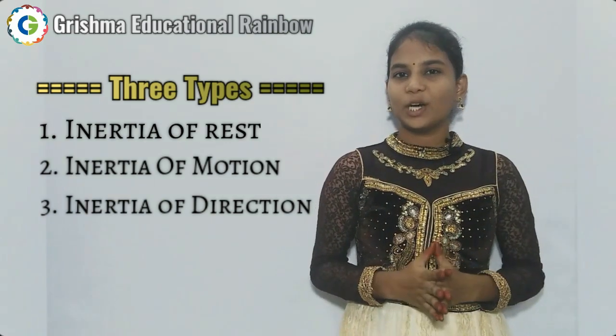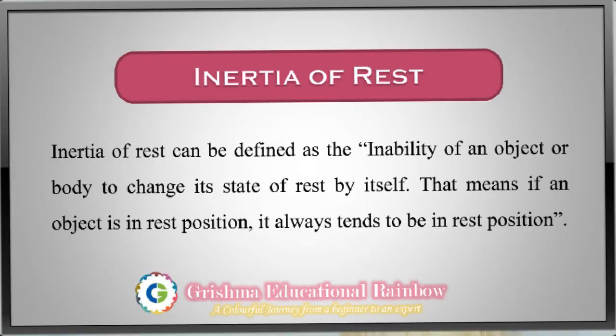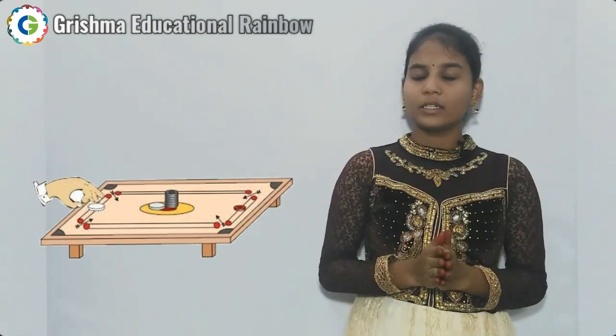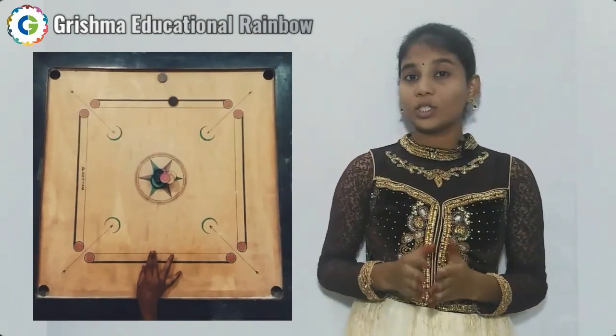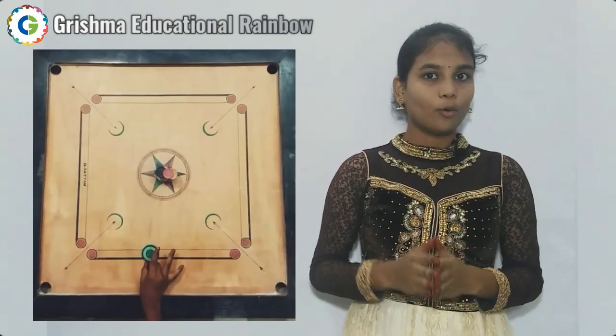Inertia of rest can be defined as the inability of an object or body to change its state of rest by itself. That means if an object is at rest, it always tends to remain at rest. For example, suppose you are playing carrom. When you strike the coins with a striker, only the coins hit by the striker move away, while the rest of the pile remains in its original position.